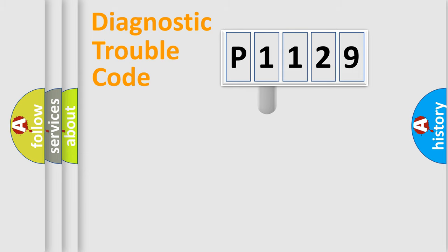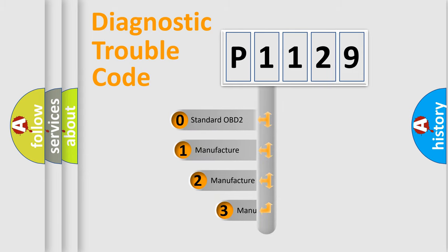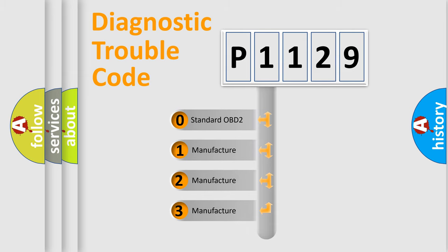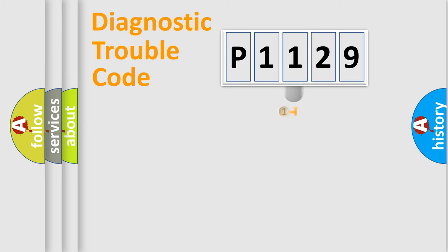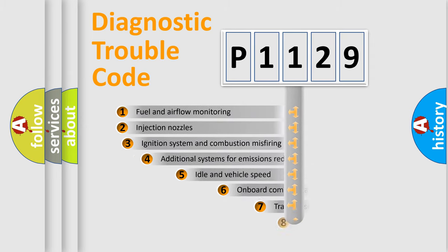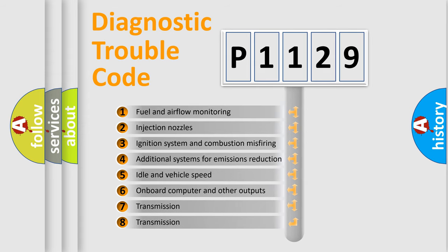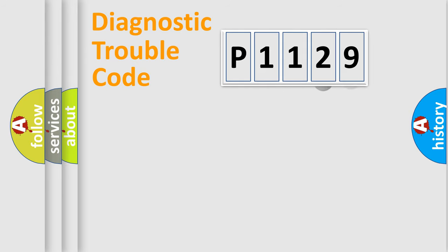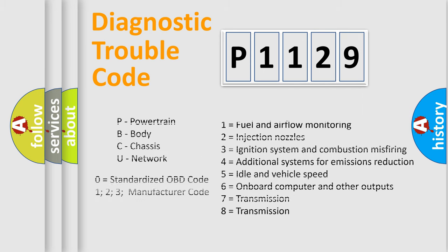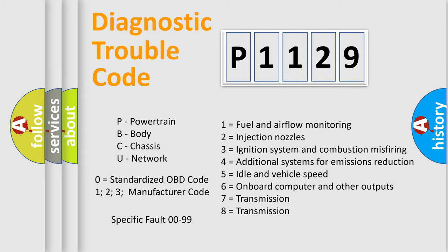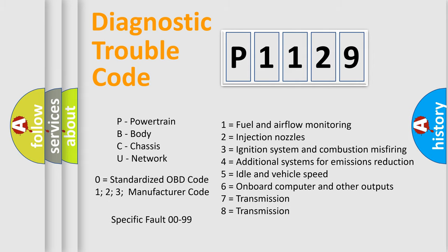This distribution is defined in the first character of the code. If the second character is expressed as zero, it is a standardized error. In the case of numbers 1, 2, or 3, it is a manufacturer-specific error expression. The third character specifies a subset of errors. This distribution is valid only for the standardized DTC code, and only the last two characters define the specific fault of the group.